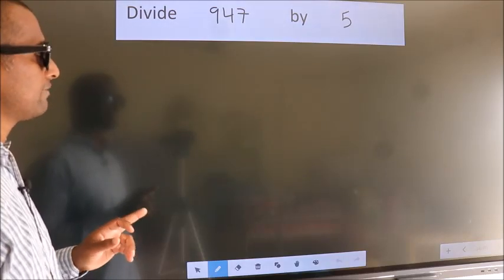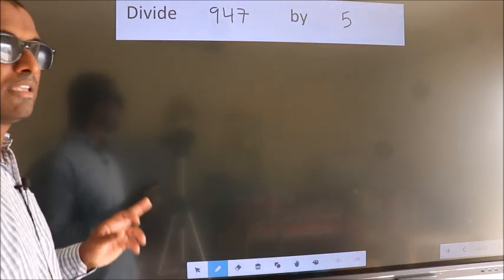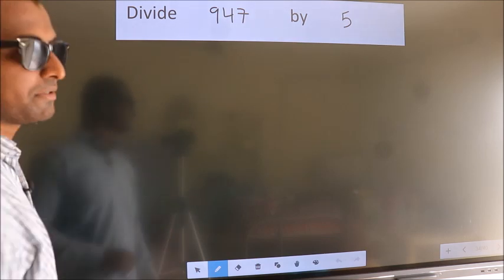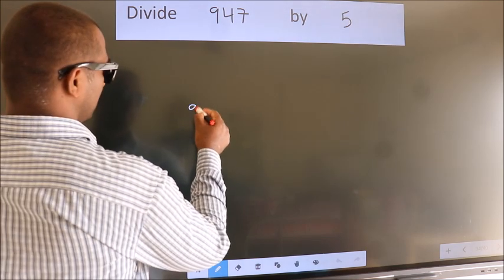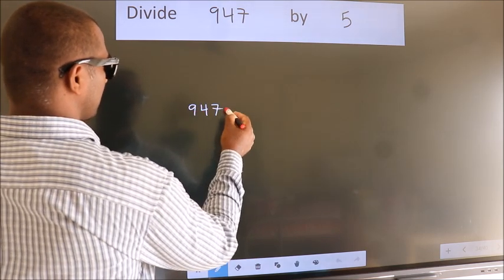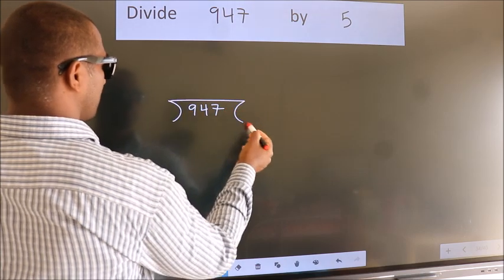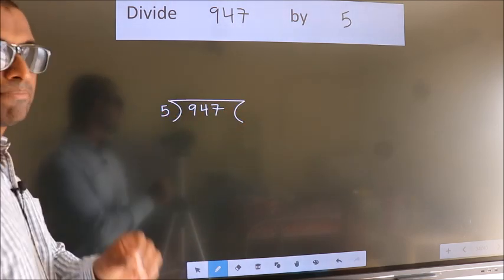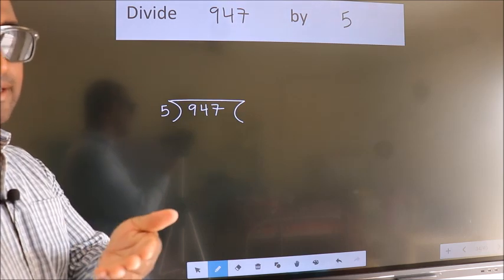Divide 947 by 5. To do this division, we should frame it in this way. 947 here, 5 here. This is your step 1.